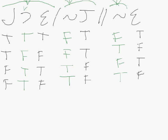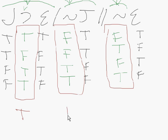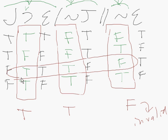What you need to do is look at the columns under the main operators for the premises and the conclusion. If we can find a case in which the premises are true but the conclusion is false on the same row, that will be an invalid argument. We found it here on the third line — we have true premises and a false conclusion, which means that this argument is actually invalid. If we cannot find that, we would conclude it's valid, but in this case, it's invalid.